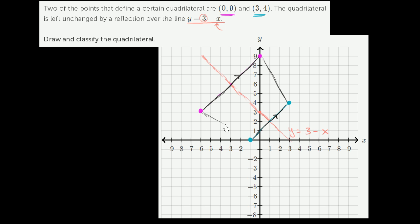So what type of quadrilateral is this? Well, I have one pair of parallel sides. So this is a trapezoid.